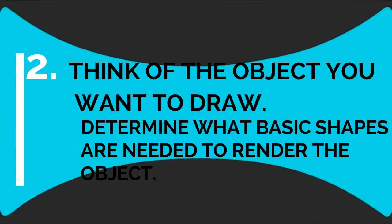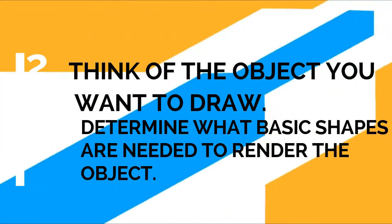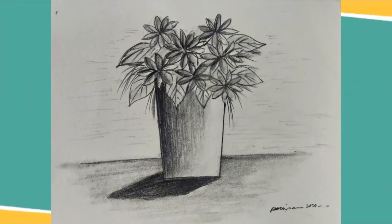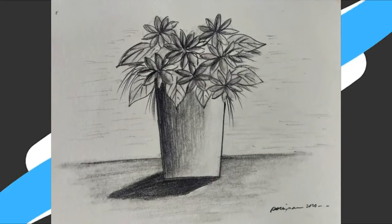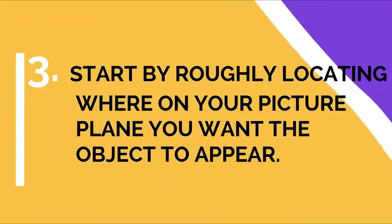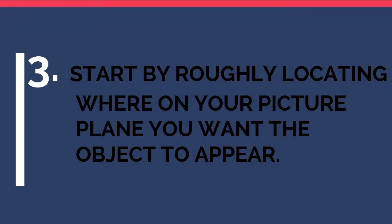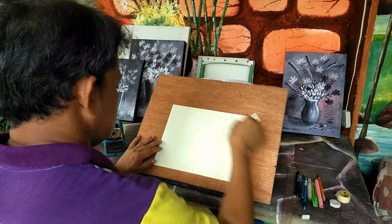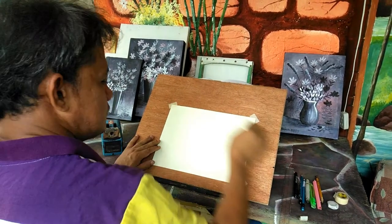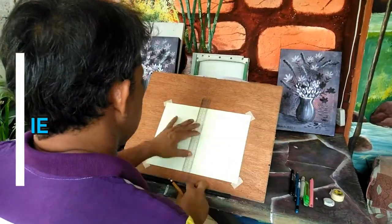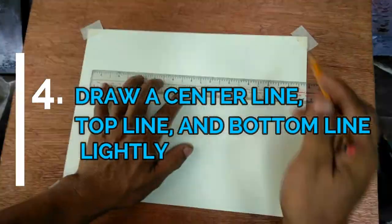Think of the object you want to draw. Determine what basic shapes are needed to render the object. In this activity, we will draw a flower vase. Start by roughly locating where on your picture plane you want the object to appear. A picture plane is a finished surface, whether it be paper, canvas, or any other drawing paper. Draw a center line, top line, and bottom line lightly.